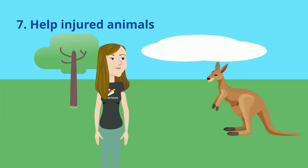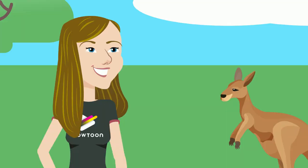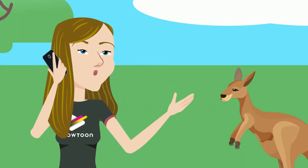Contact WIRES on 1800 094 737 if you find sick or injured wildlife on your property.